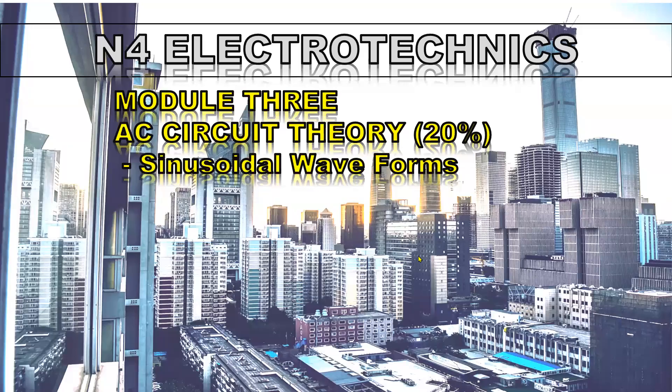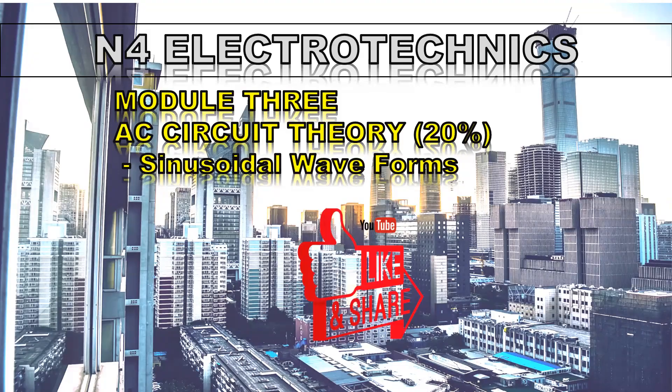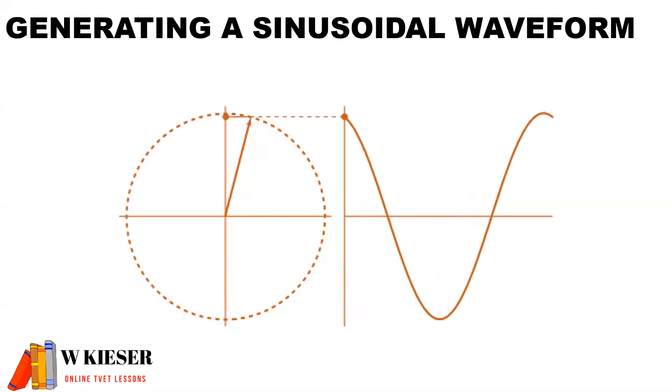Welcome to this video for N4 Electrotechniques. In this module, Module 3, we'll be looking at AC circuit theory, which makes up 20% of the curriculum. In this video we'll be looking at sinusoidal waveforms. To show you how a waveform is generated, as a coil rotates 360 degrees it produces a sinusoidal waveform, and in this case we're looking at single phase AC.